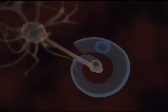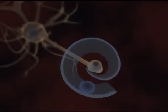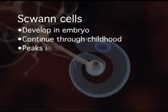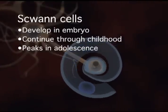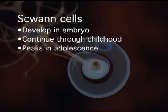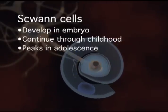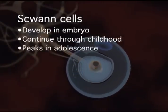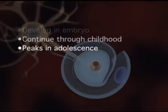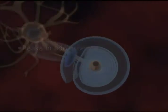The Schwann cell forms a protective covering around the axon. Schwann cells start to develop in the embryo and continue to increase the wrapping around the axon through childhood. This development increases the thickness of the wrappings which peaks in adolescence. This is why teenagers have such quick responses.